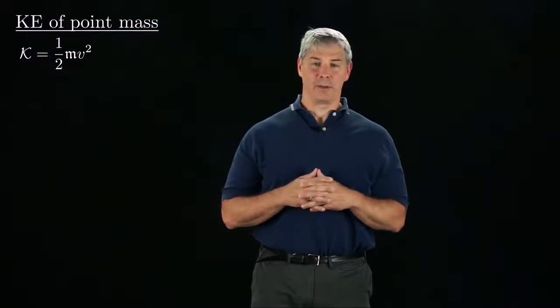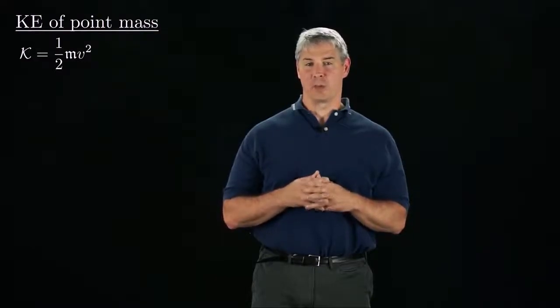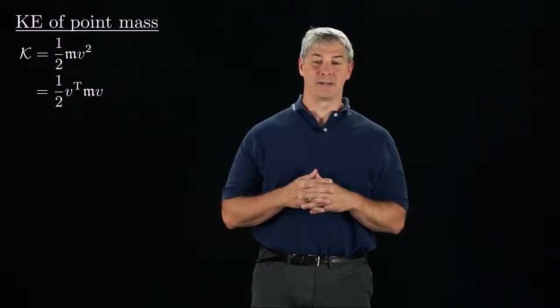First, recall that the kinetic energy of a point mass is one-half mv squared, where m is the mass and v is its scalar velocity. If v is a vector, we could rewrite this as one-half v transpose times m times v.